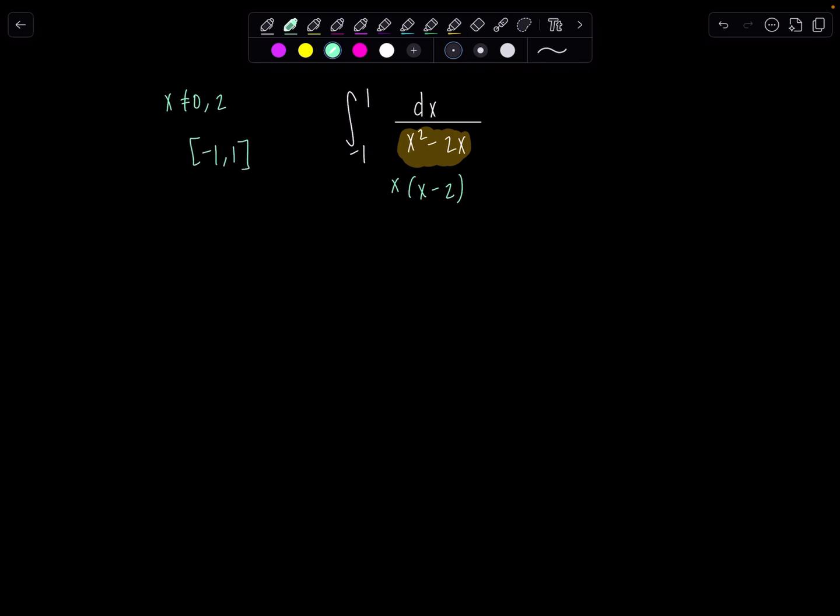So what do we do? We're going to have to split it up at zero. So we're going to have one integral that goes from negative one to zero, dx over x squared minus two x, plus the other one's going to go from zero to one, same thing dx over x squared minus two x.